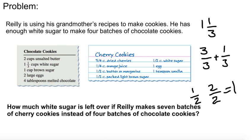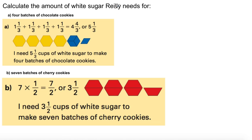Now let's calculate the amount of white sugar Riley needs for 4 batches of chocolate cookies. We have 1 and 1 third, so the whole is 3 thirds. We take 1 batch, another 1, another 1, and finally another 1 — 4 batches of 1 and 1 third cups each. So you have 1 third plus 1 third plus 1 third plus 1 third. Three of those thirds make 3 over 3, which is your whole number. So now you have 4, and you still have 1 third left over.